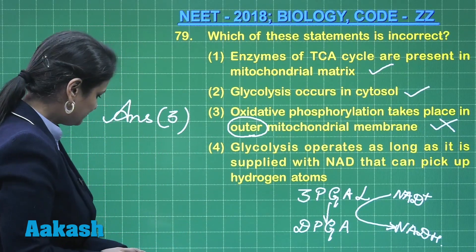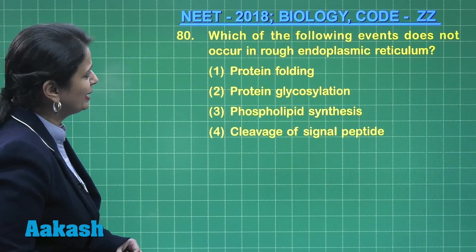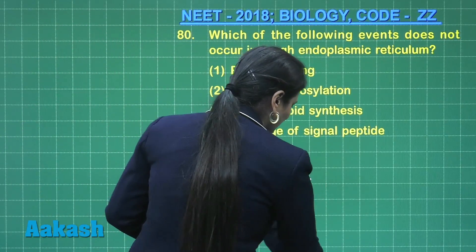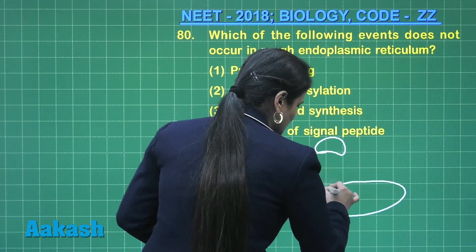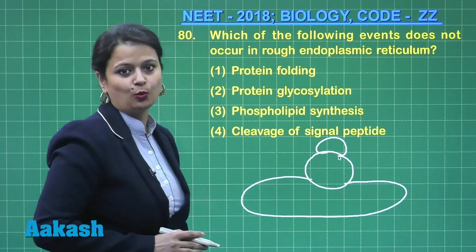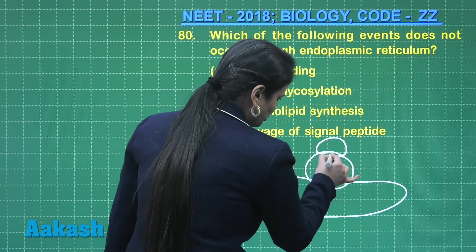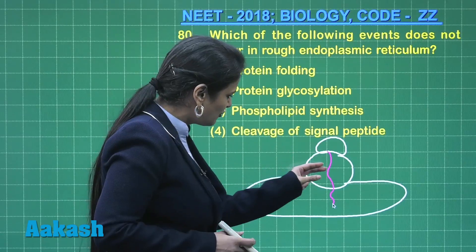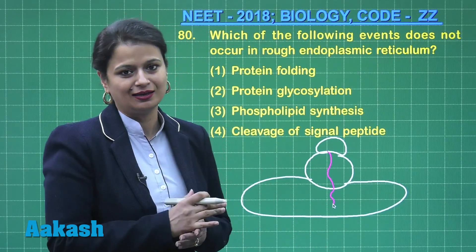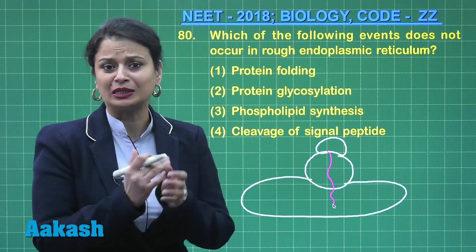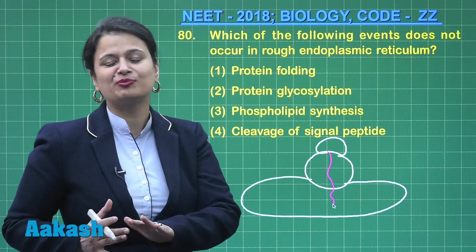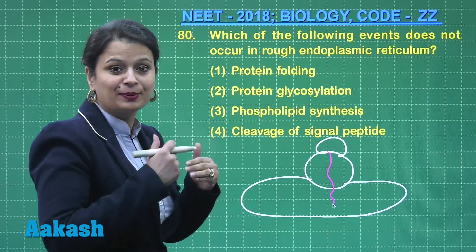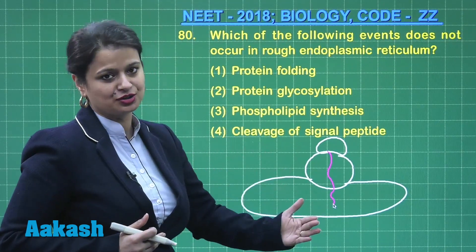Coming to question number 80: which of the following events does not occur in rough endoplasmic reticulum? The first option is protein folding. In rough ER, ribosomes are attached to the cristae and are involved in the synthesis of proteins. The protein synthesized has a primary structure — a sequence of amino acids coded by mRNA. The primary structure is non-functional, so protein folding converts it into the secondary and tertiary forms, which are functional.